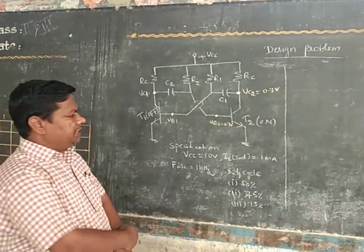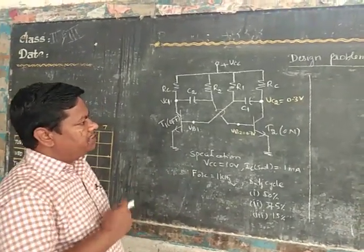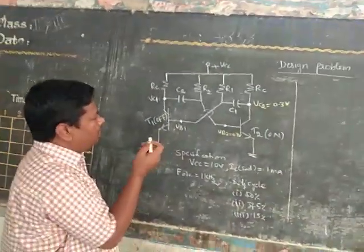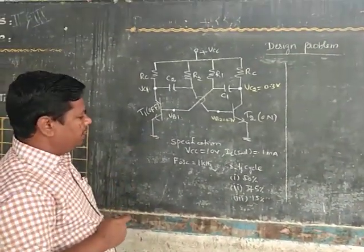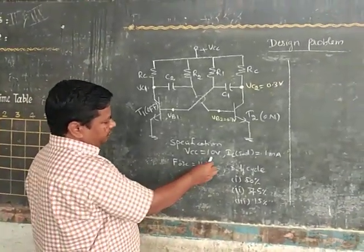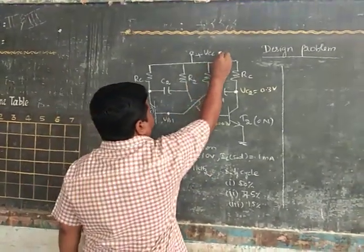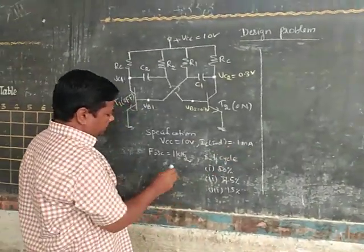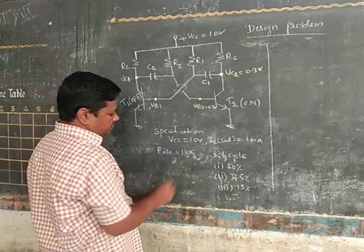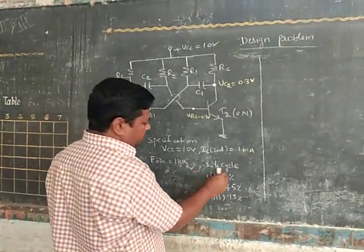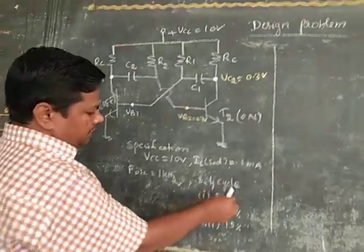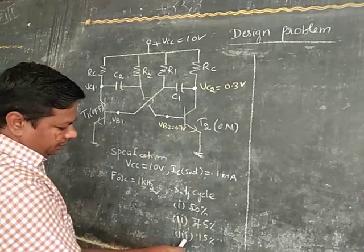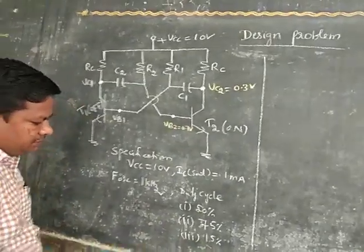Now coming to the design problem, we have some specifications. Based on the specifications, we have to calculate resistor values: RC, R1, R2, C1 and C2 values. The given specifications are: VCC is equal to 10 volts, IC saturation is equal to 1 milliampere, frequency of oscillation is equal to 1 kilohertz, and duty cycle — first case 50%, second case 75%, third case 15%.